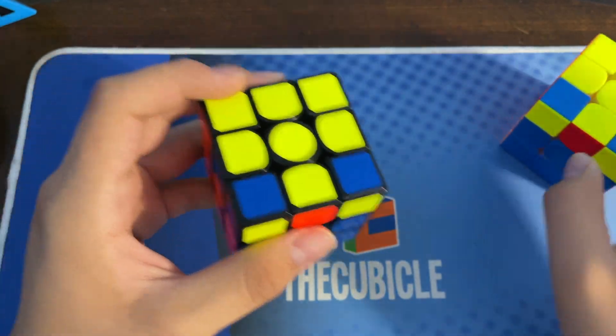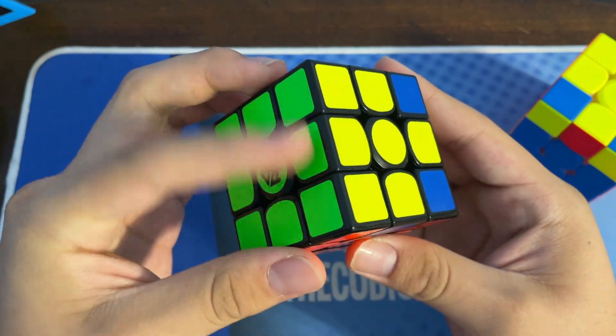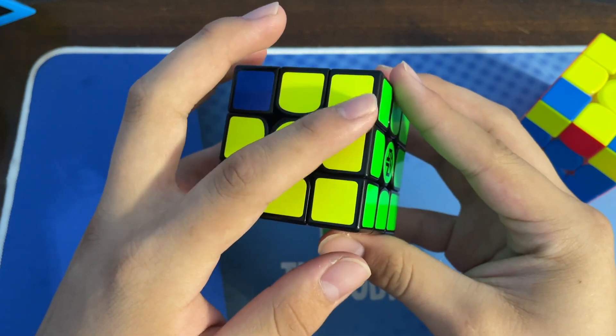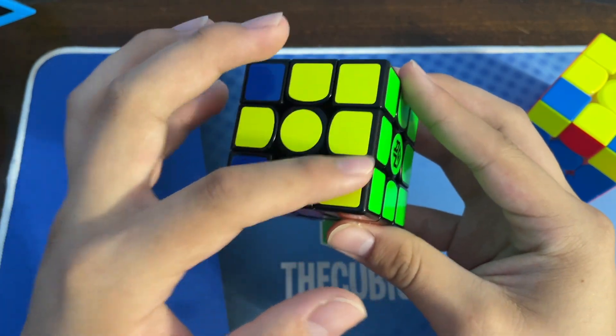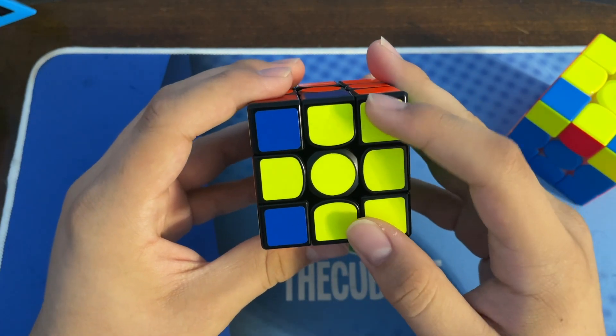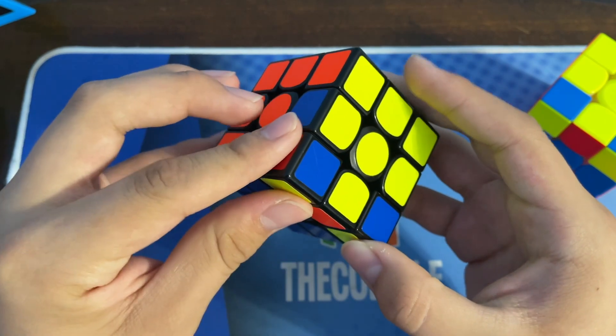The way you recognize this first one here is the back is completed and so is this side. The completed bit, the solved bit, is like a backwards L or a J, and all of this needs to be swapped.